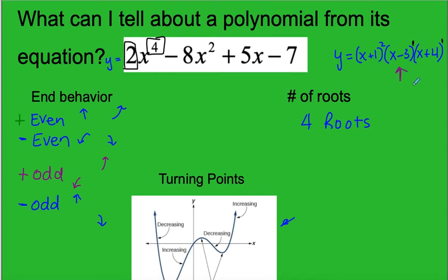If it's in factored form, we can also tell the x-intercepts or in this case all of the roots. For example, this x-intercept would be negative 1, 0, and it would be a double root because it's a degree of 2. This one's x-intercept would be 3, 0. And this one's would be negative 4, 0.